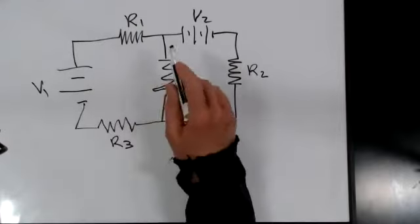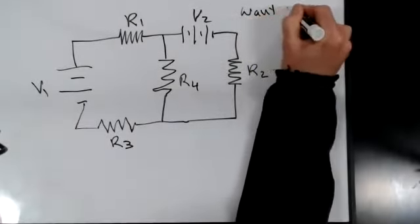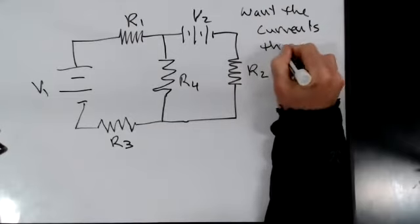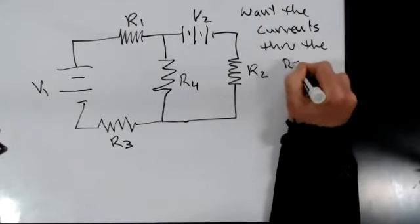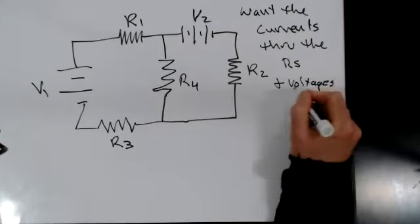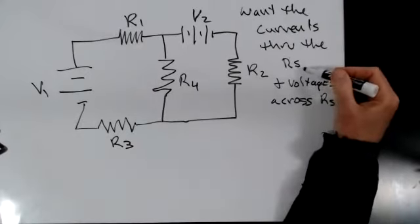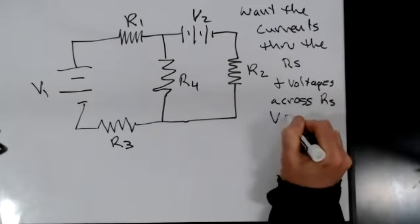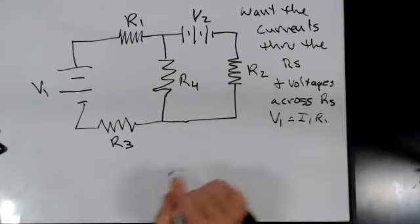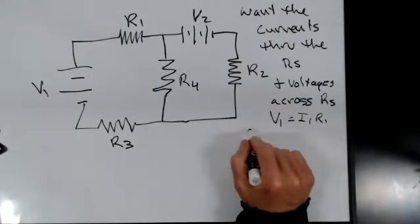Usually what you have in a circuit is a bunch of resistors and batteries, and you want to know the current through the resistors and maybe the voltages across the resistors. If you have the current through the resistors, you can get the voltages across, because the voltage like V1 is equal to I1 times R1. If I know the current through a resistor, I know the voltage across it by multiplying current by resistance.